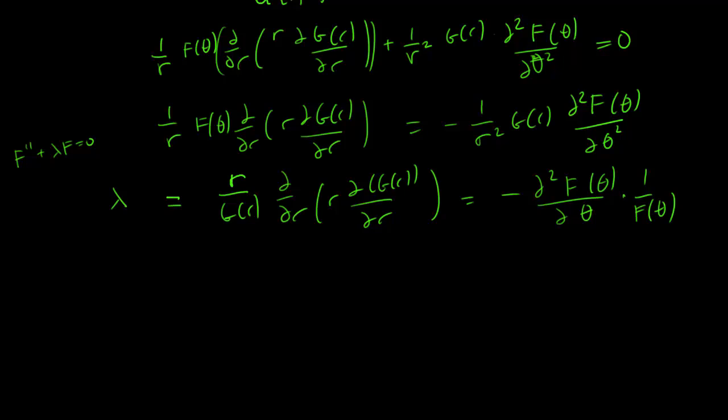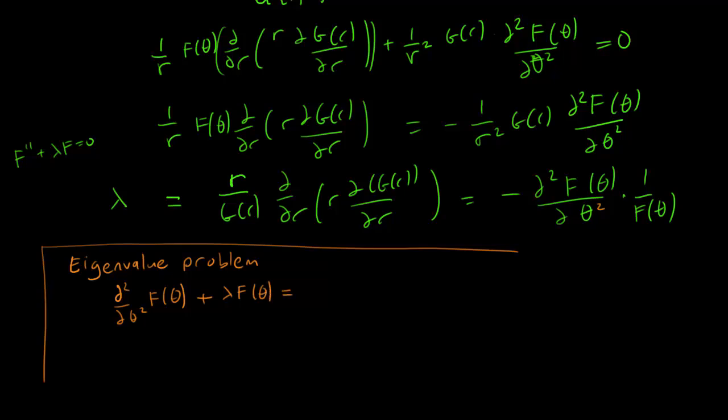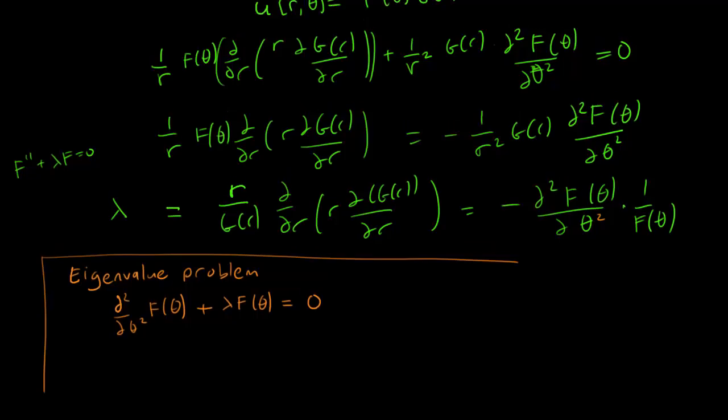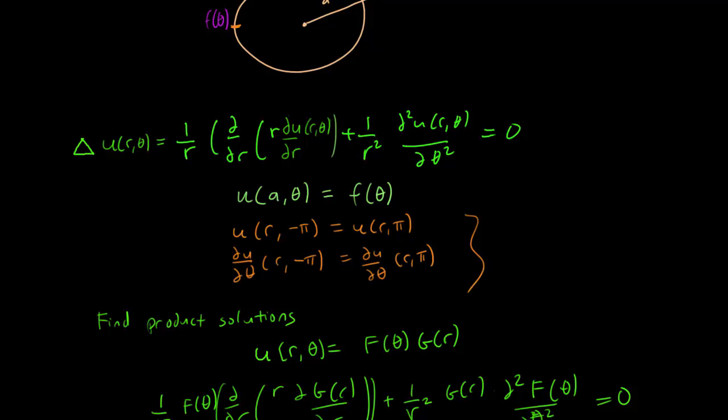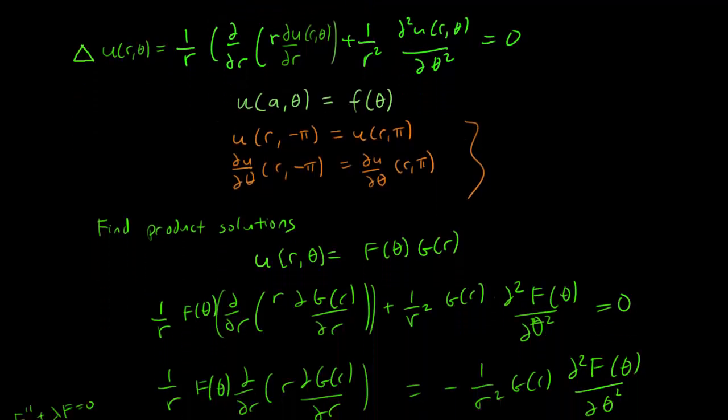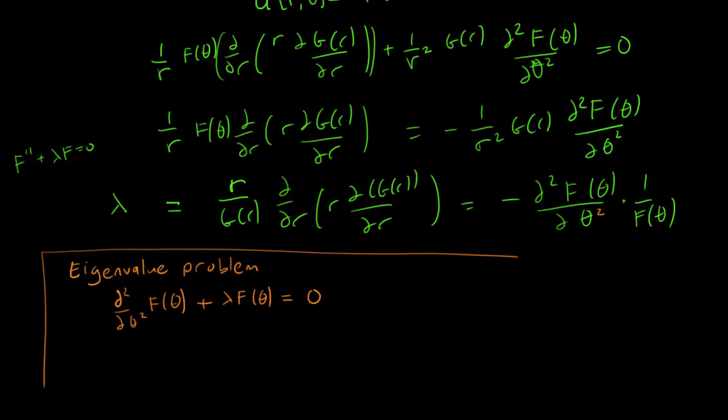Let's figure out then our eigenvalue problem. And we have, as we stated, that partial squared, partial theta squared, f theta plus lambda f theta is equal to 0. That's our equation. But what are our boundary values? These are simply the hidden boundary values that we alluded to, that related to the fact that our boundary condition was a circle.